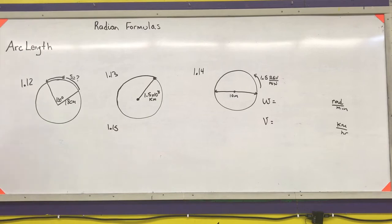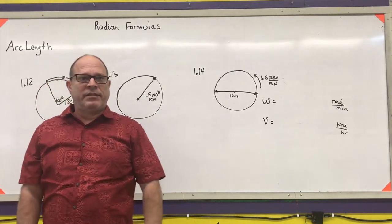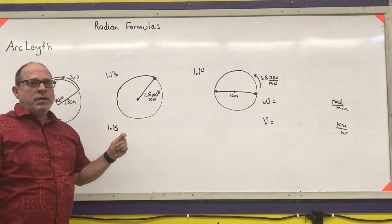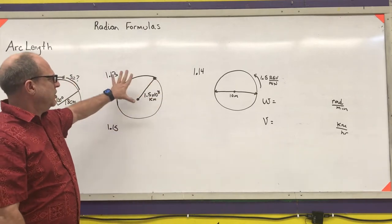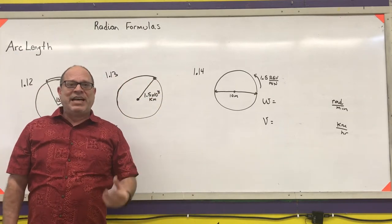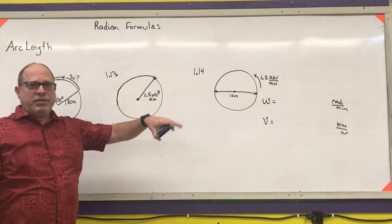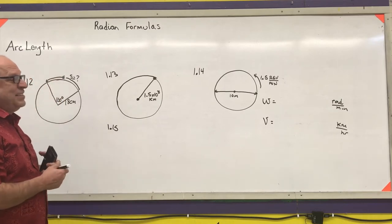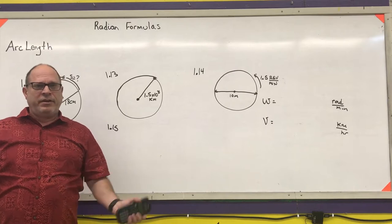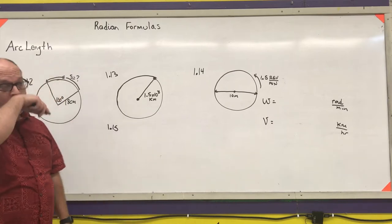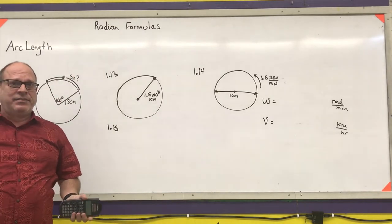In section 1.2 we're going to talk about radian formulas. The reason we use radian formulas is that in advanced math and advanced science, radians are the only measurement we use because they make formulas simpler. Instead of dealing with 360 degrees, 2π radians makes things work out easily. If you take a calculus class, you're always assumed to be in radians. We'll also talk about how to extend these formulas if you're using degrees.